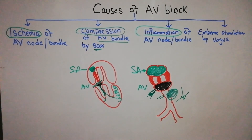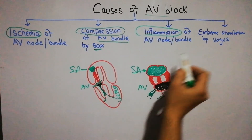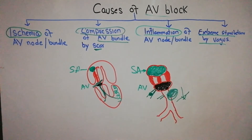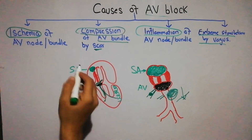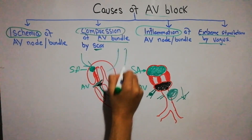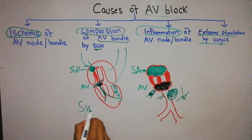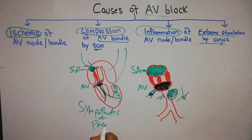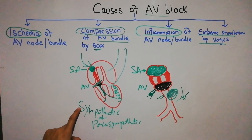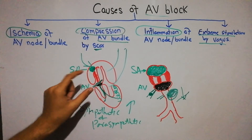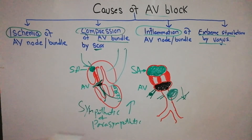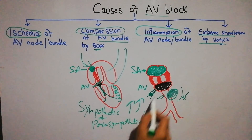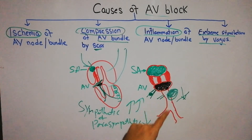The final cause for AV block is extreme stimulation by the vagus nerve. The heart is supplied by both sympathetic and parasympathetic nerves. Sympathetic nerves increase the heart rate, stimulate the SA node, and increase the contraction power of the heart. Parasympathetic nerves decrease the heart rate and decrease the conduction power of the SA node and AV bundle.